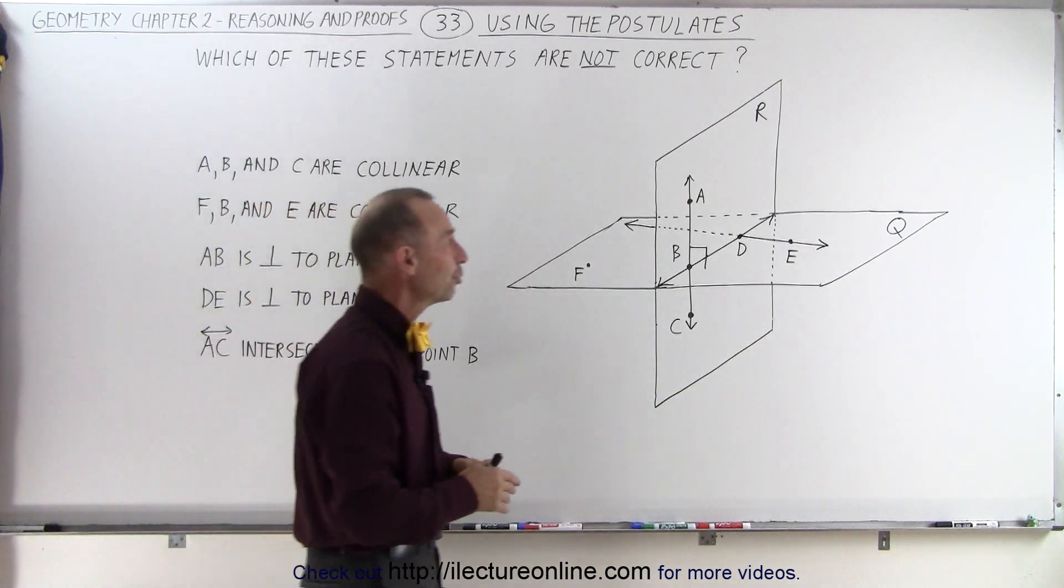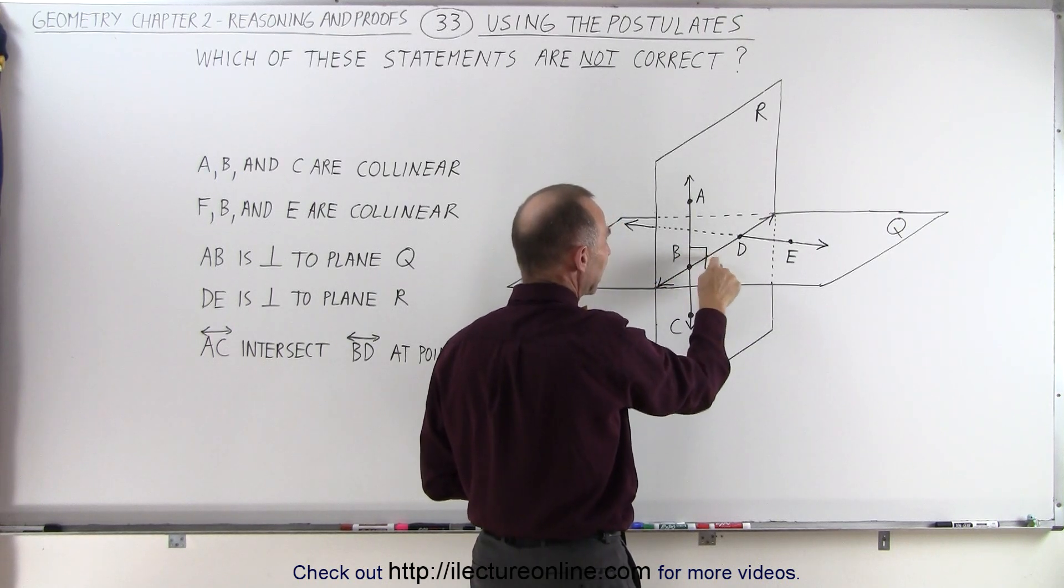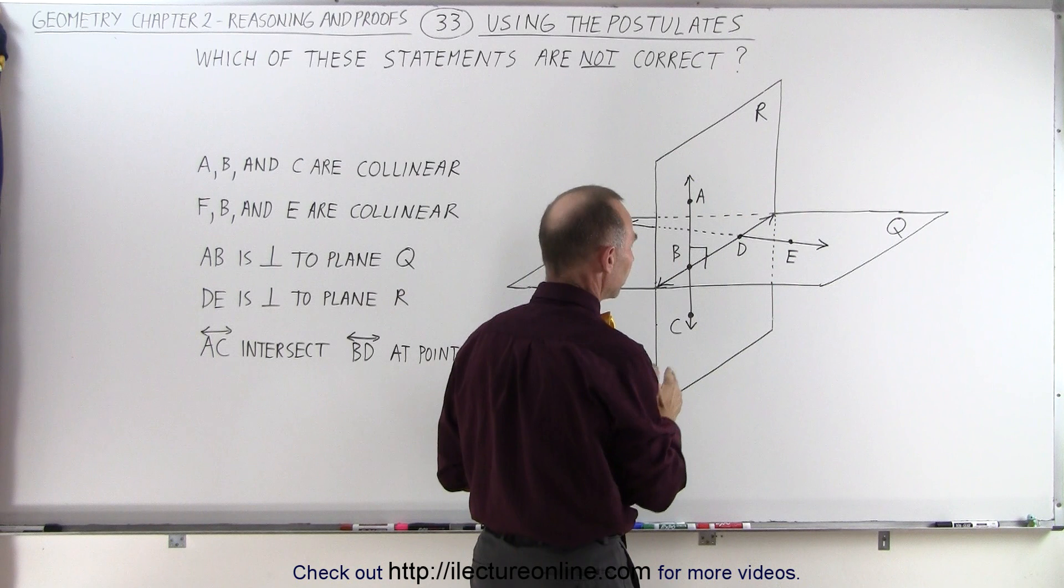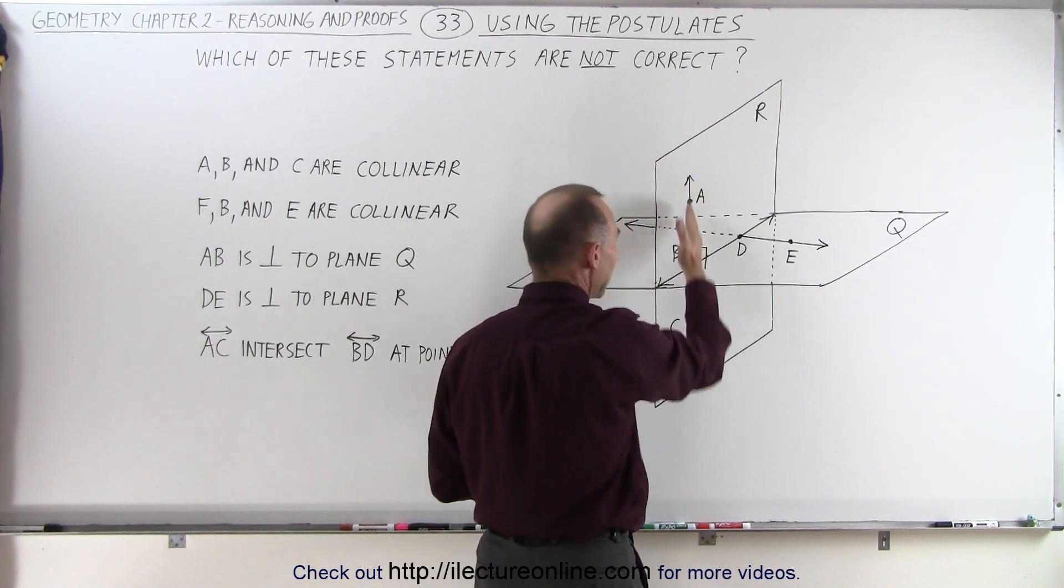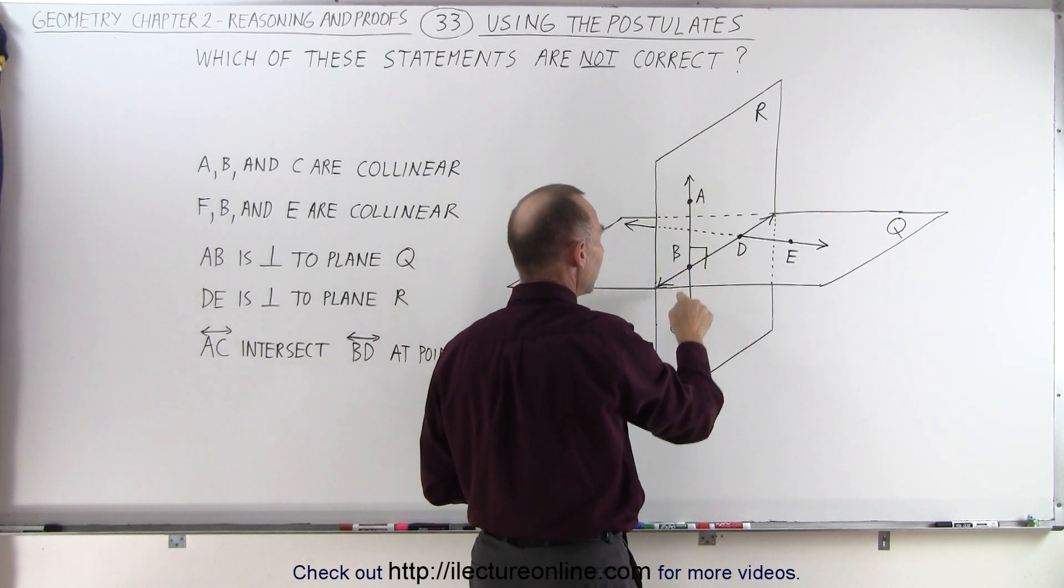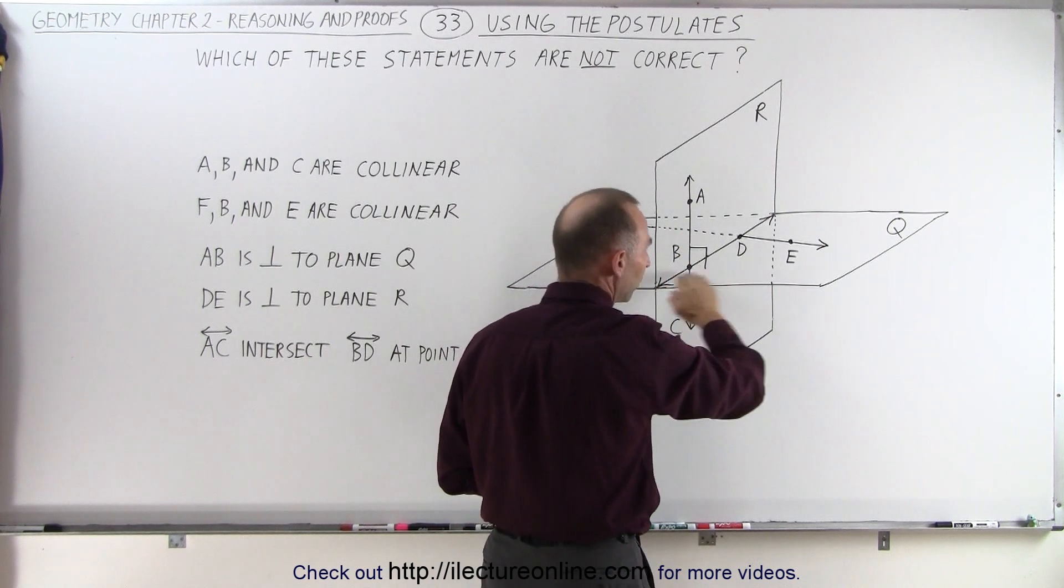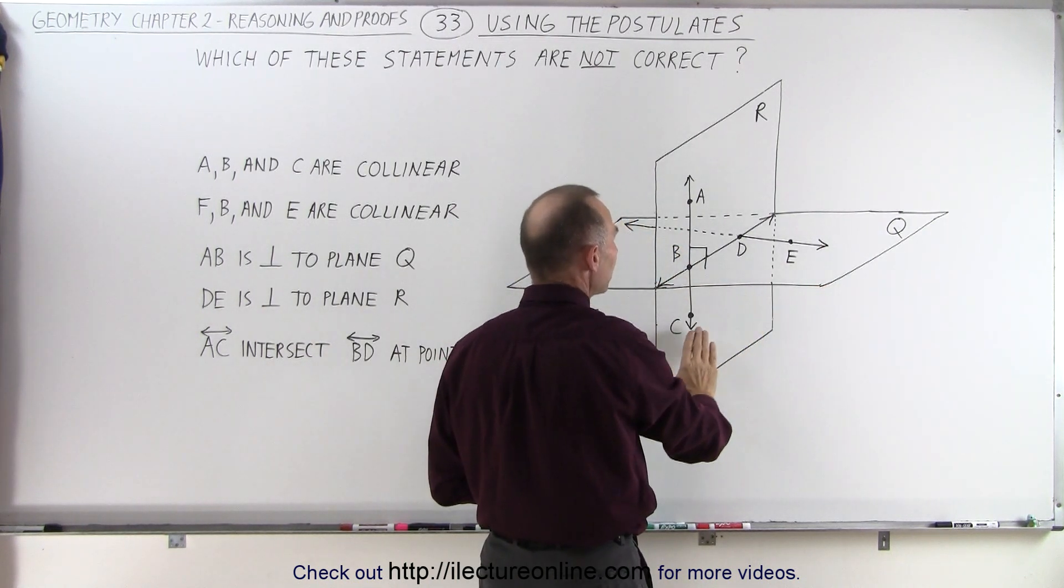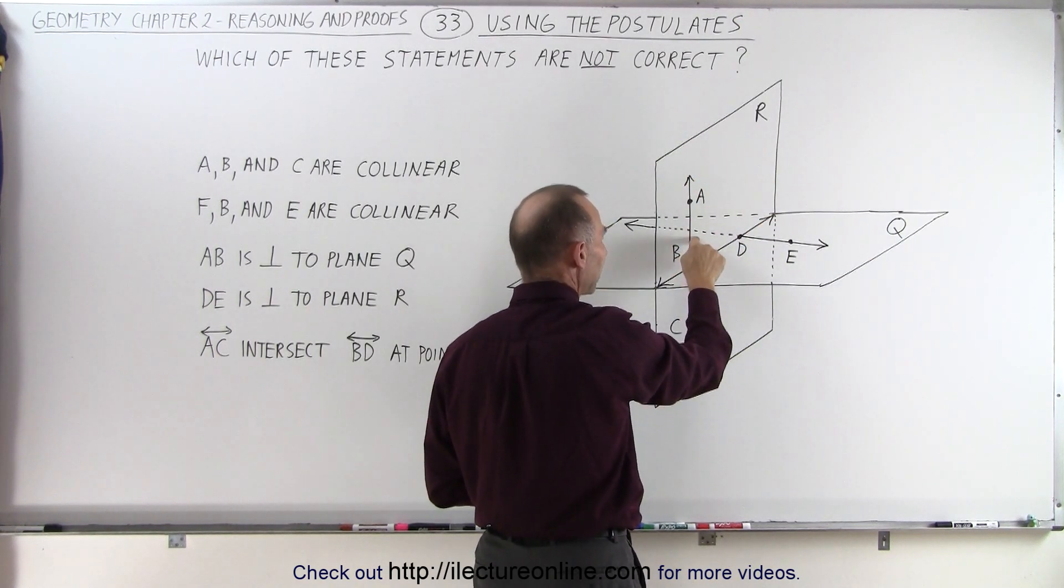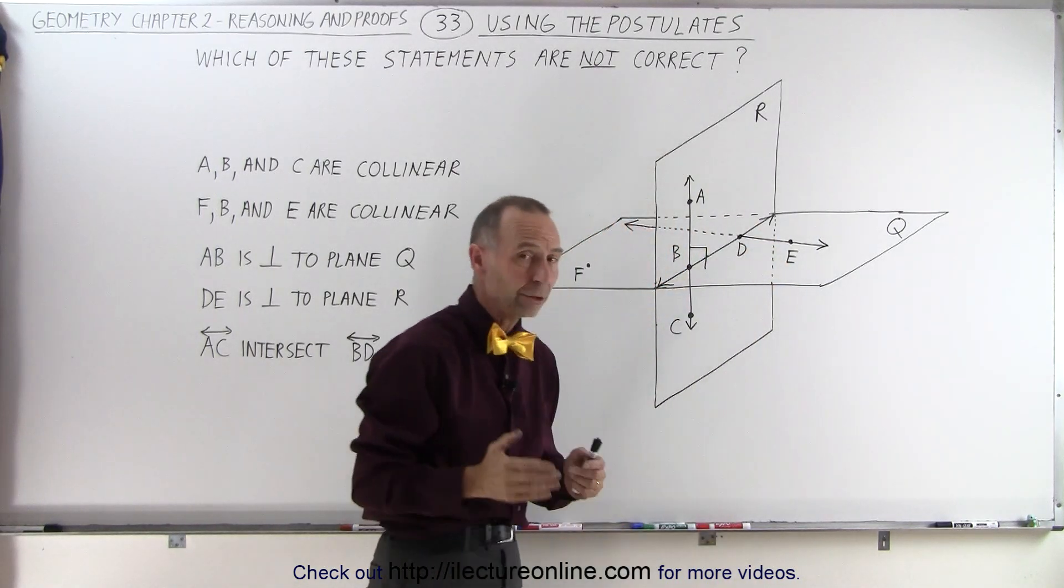So first of all we have two planes, plane R and plane Q, and here there's an indication that plane R and plane Q are perpendicular to one another because we have a line that's in plane R which has points A, B, and C. And notice that this line is perpendicular to plane Q, which means since line ABC is in plane R and if that line is perpendicular to plane Q, then plane R must also be perpendicular to plane Q.